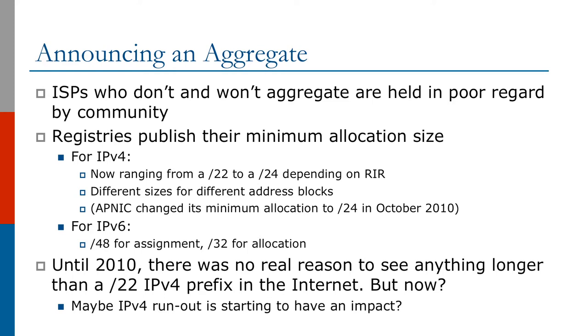ISPs who don't aggregate are generally held in poor regard by the internet operations community. The regional internet registries publish the minimum allocation sizes. At the time of making this recording, for all registries the minimum allocation for IPv4 was a slash 24, and for IPv6 it was a slash 48 for an assignment going to an end user, or a slash 32 for an allocation, which is what goes to a network operator.